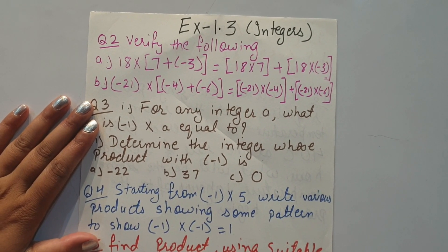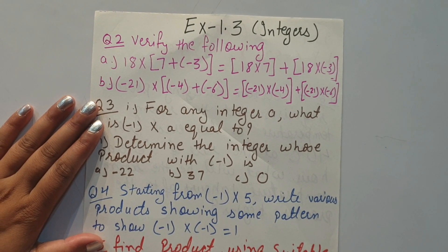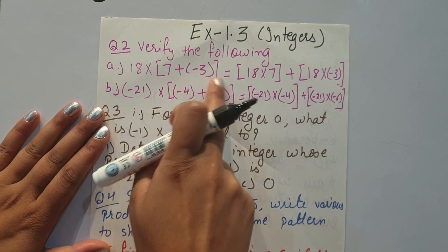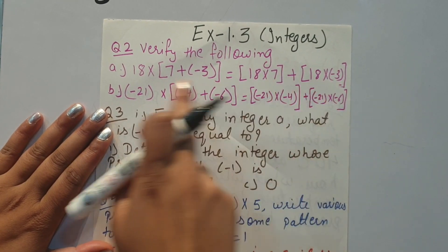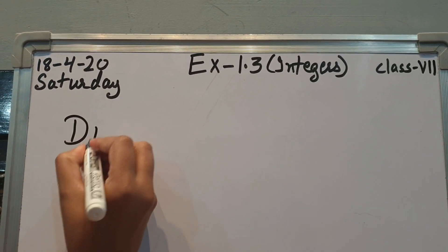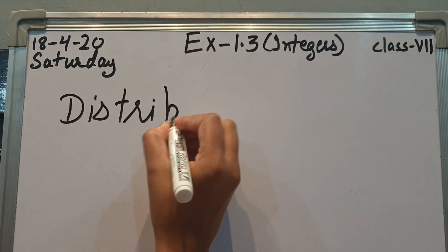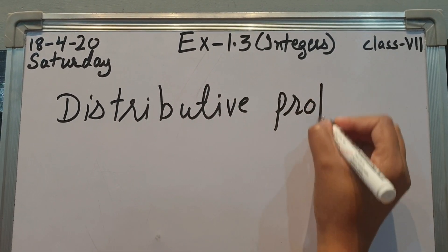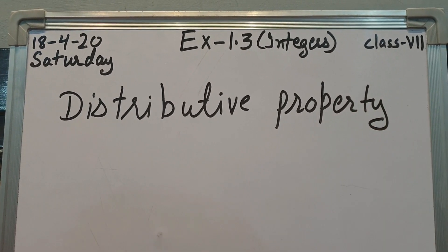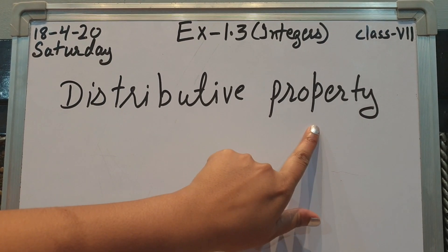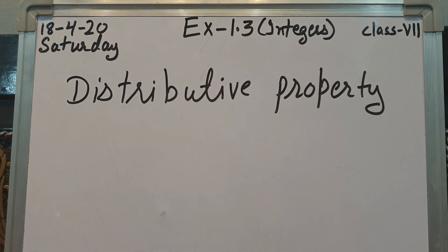In this question they are saying: verify the following — 18 multiplied by (7 + (−3)) — that equals this. Now before starting this question, first I am going to explain you the distributive property. I hope in the video I sent you last time you must have seen it; I explained this property, but right now I am going to explain it again.